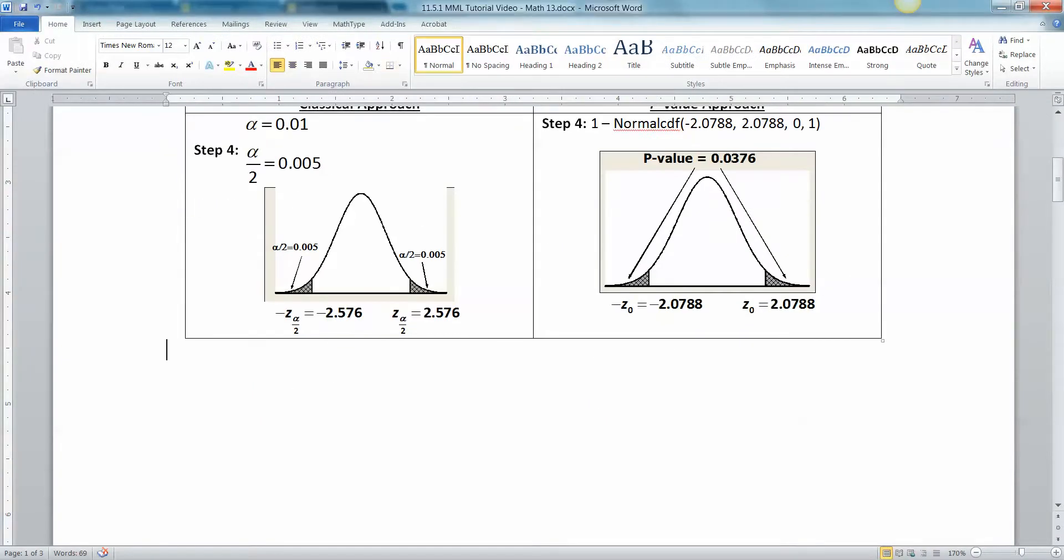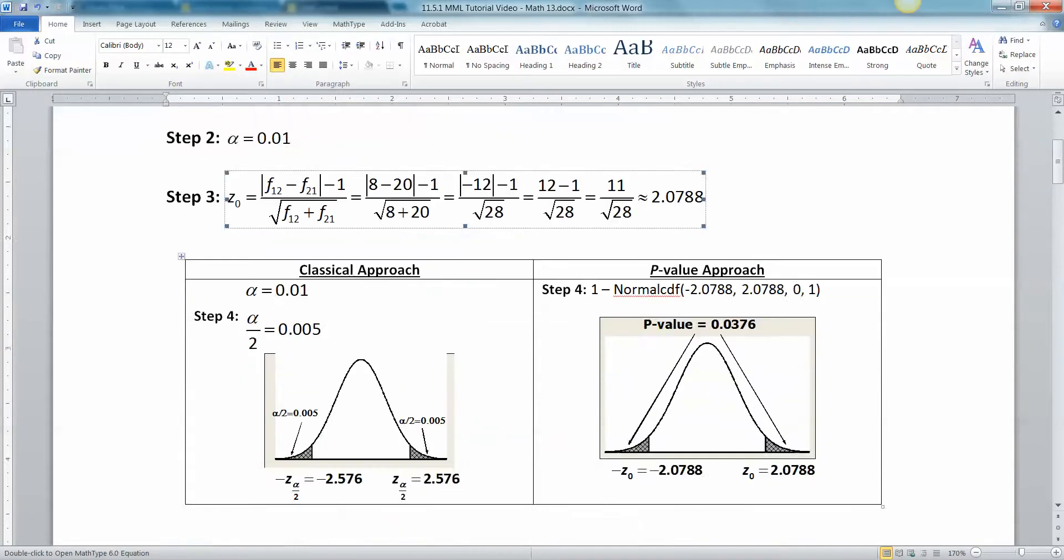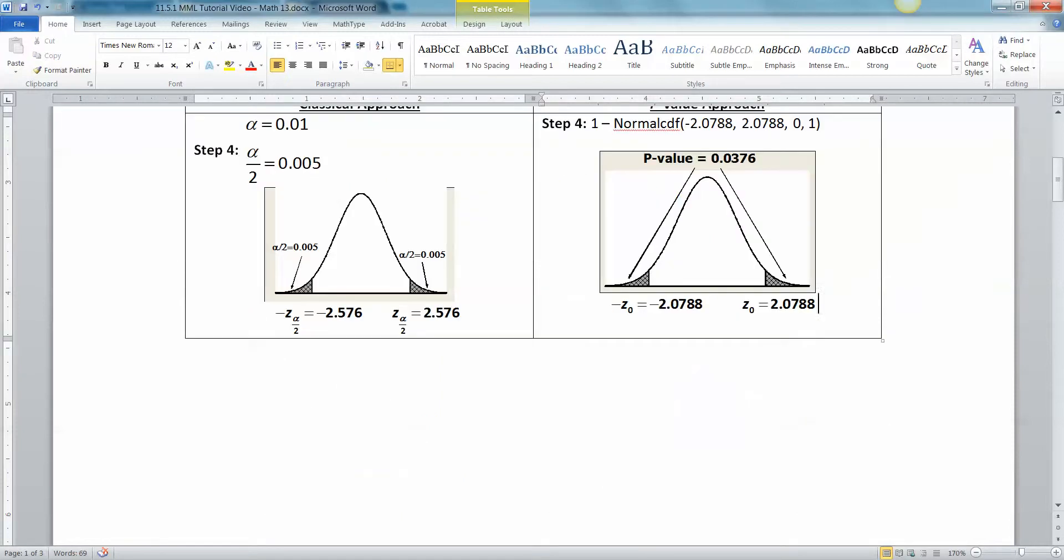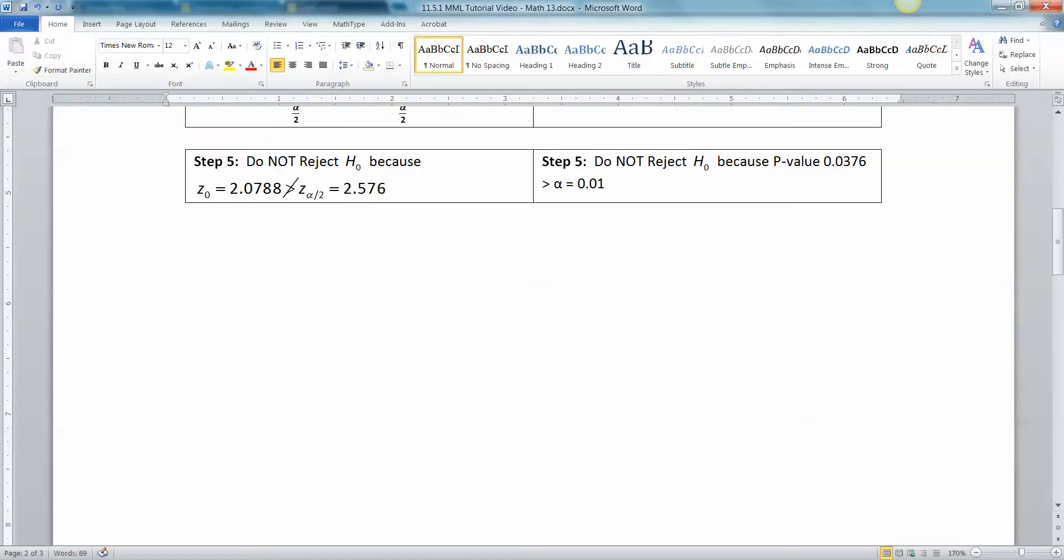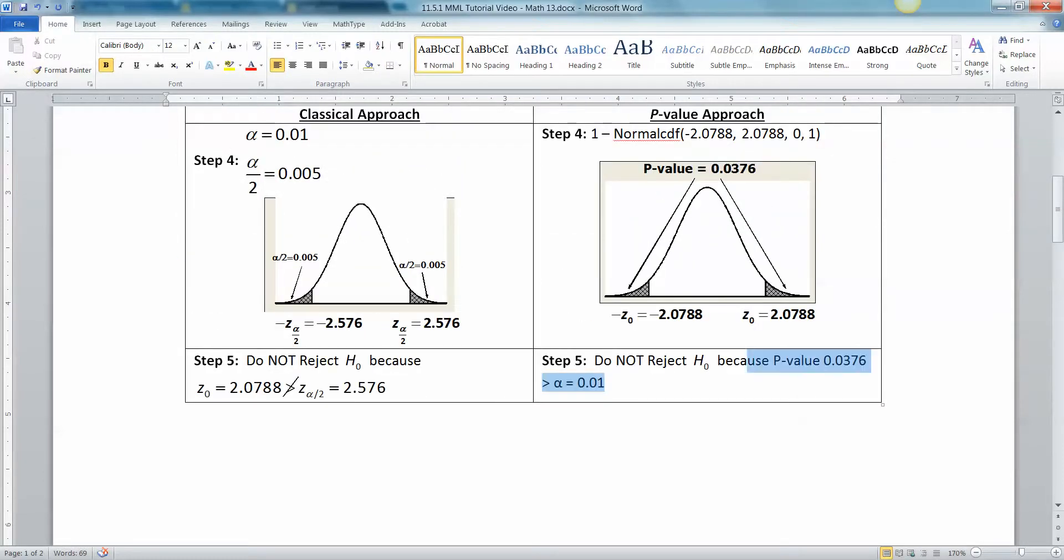Step five would be a decision. Well, remember, you reject, let's think about the classical approach first. You reject if your test statistic, which is 2.0788, is in the dark tail, right? Is it out there past the critical value, which the answer is no, it's not. So you're not going to reject the null hypothesis, because 2.0788 is in this white region right here, which is not the rejection region. And alternatively, you can see with the p-value method, the p-value is 0.0376. And we always reject if our p-value is low, and our p-value is not low enough. Our alpha is 0.01, so we're not going to reject. And that's what I typed up right here.